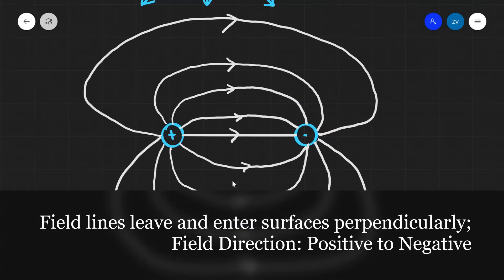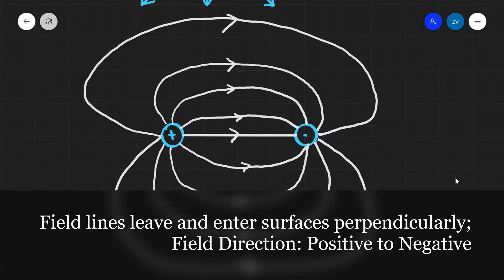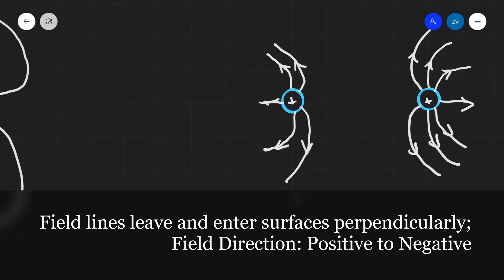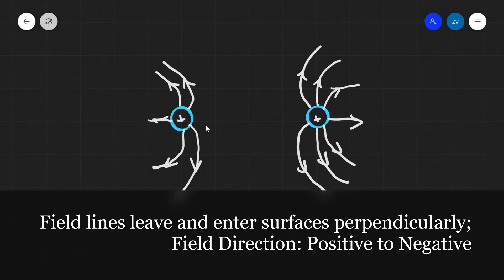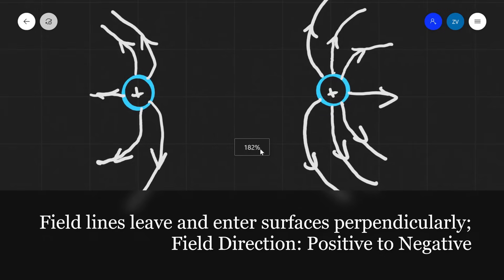If we have two charges, one positive and one negative, there's going to be a net electric field between them. The field lines always leave the surface at 90 degrees, curve towards the other particle, and enter the other surface at 90 degrees. If we had two like charges, there would not be any resulting net electric field between them — it gets cancelled out in between because the charges repel each other.